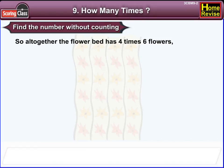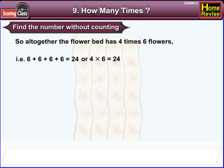So altogether, the flower bed has 4 times 6 flowers. That is 6 plus 6 plus 6 plus 6, which is 24. Or 4 into 6 is 24.